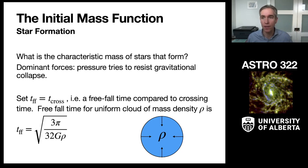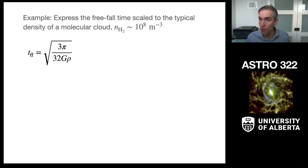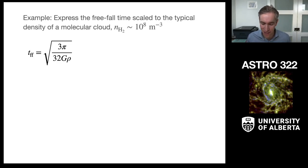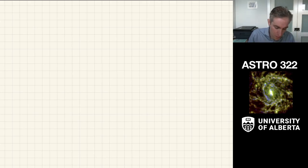We can derive that the free fall collapse time for a spherical uniform density cloud has the form T_FF = sqrt(3π / 32Gρ). I want to work through the mechanics with an example: what is the free fall collapse time for a typical molecular cloud at a volume particle density of 10^8 particles per cubic meter?